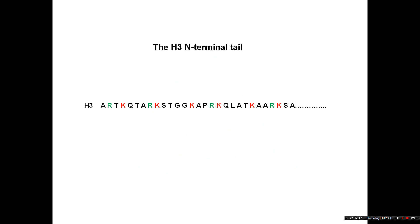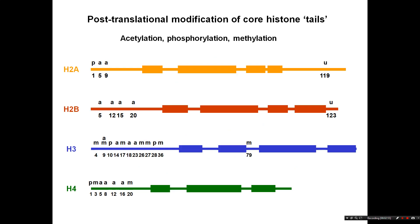Both lysines and arginines can be modified, and there are also a couple of serines that can be modified too. There are many sites even on just one N-terminal tail that can be post-translationally modified. Types of modification include acetylation on lysines, phosphorylation on serines, methylation on lysines and arginines, and also ubiquitylation — and this isn't even a complete picture.